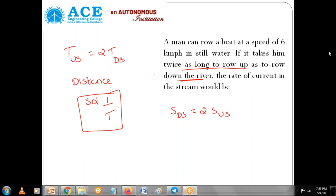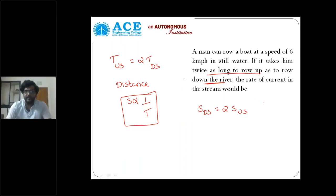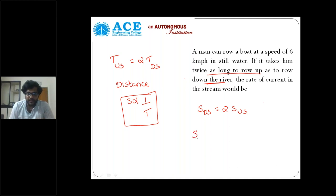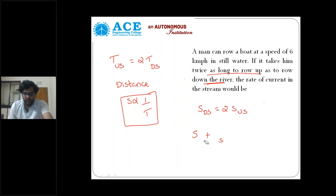Here they have given downstream and upstream. Distance is same. Speed is inversely proportional to time. Downstream is speed of boat plus speed of water flow — both are added since you are going along with the water flow. Upstream means against the water flow, so speed of boat minus speed of water flow.